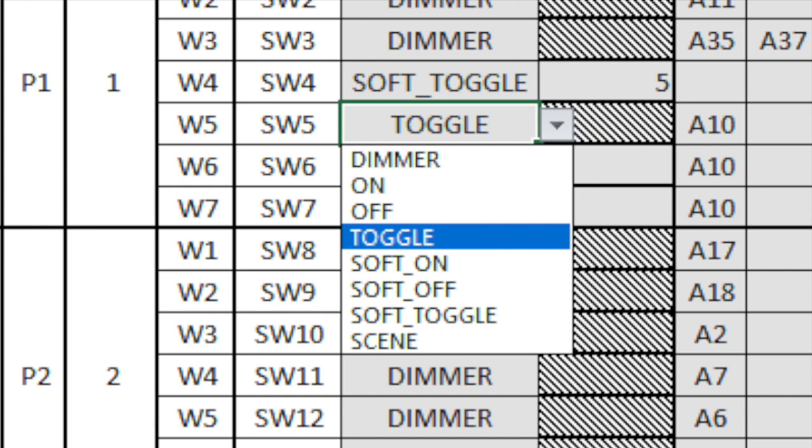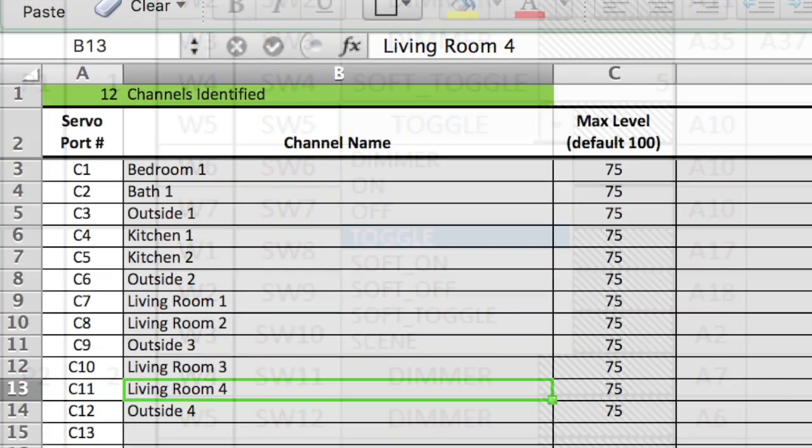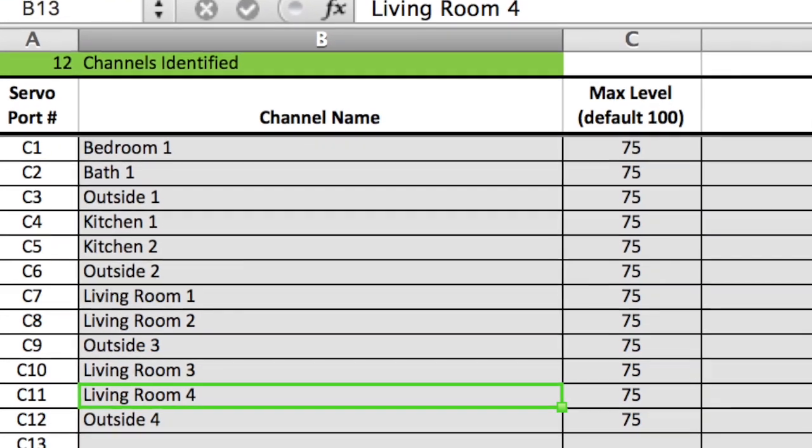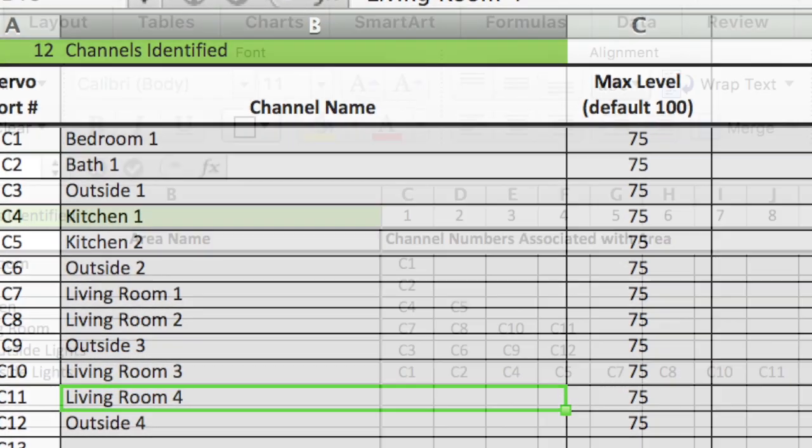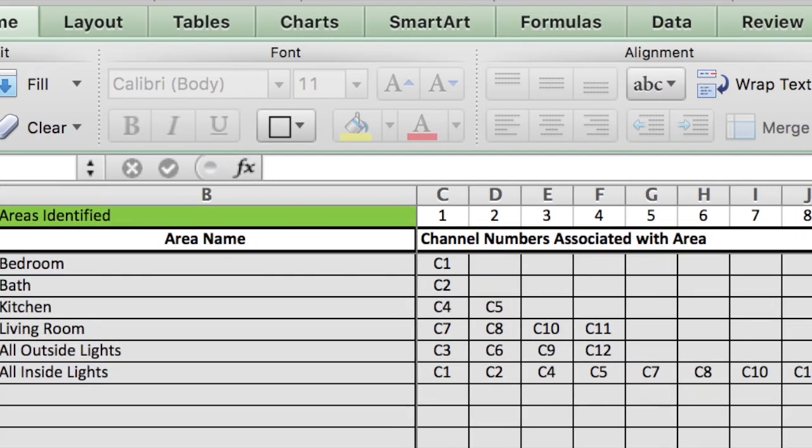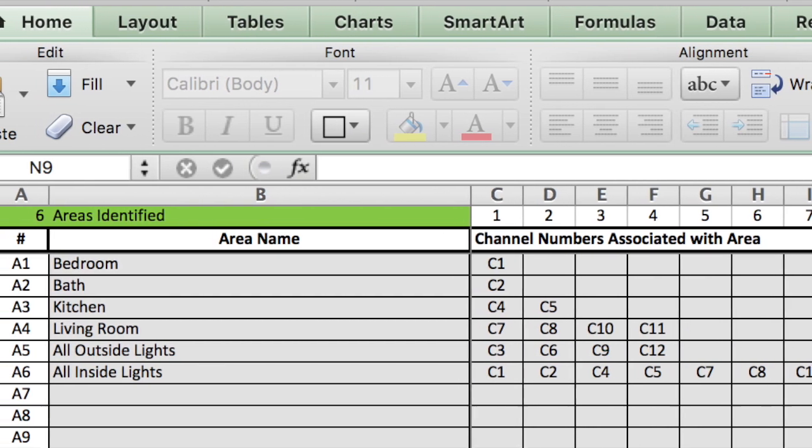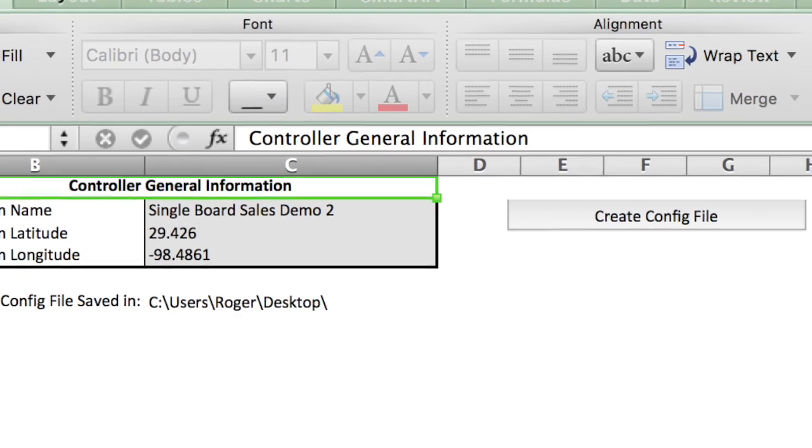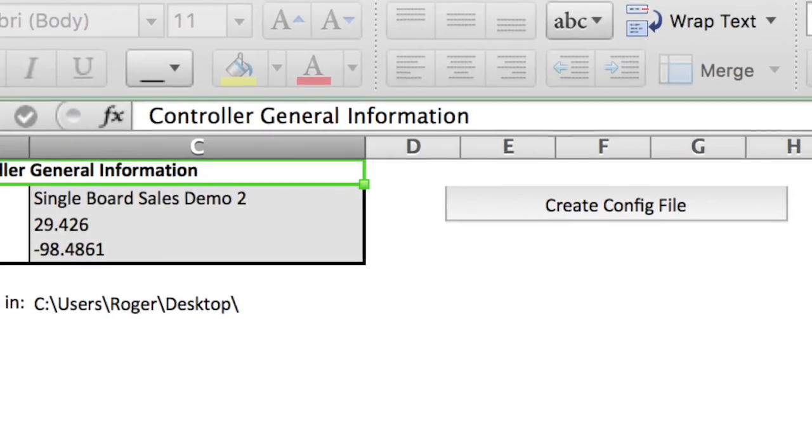The PMMI lighting system is programmed to perform all functions using a simple Excel spreadsheet. There's no complicated programming language to learn, no linking of switches or lights. You just fill out the spreadsheet, press a button to create the config file and off you go.